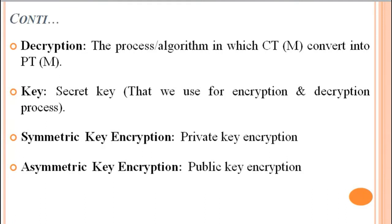A key is a secret number or alphanumeric value used to encrypt and decrypt a message. Symmetric key encryption, sometimes called private key encryption, means the sender and receiver both use the same key. Asymmetric key encryption means the sender and receiver use different keys — if the sender uses a private key for encryption, the receiver uses a public key for decryption, and vice versa. It is sometimes called public key encryption.